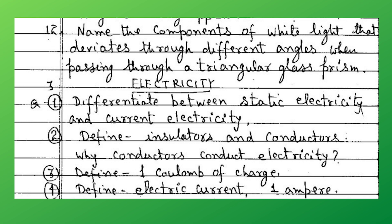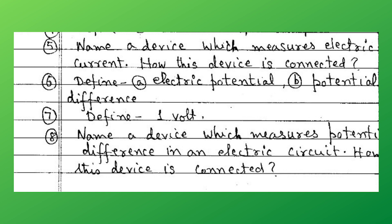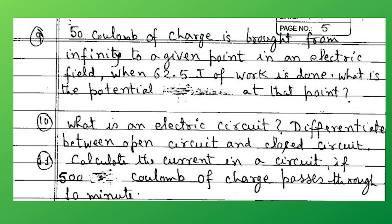Now, electricity. Differentiate between static electricity and current electricity. Define insulators and conductors — why do conductors conduct electricity? Define one coulomb of charge. Define electric current and one ampere. Name a device which measures electric current and how this device is connected. Define electric potential and potential difference. Define one volt. Name a device which measures potential difference in an electric circuit and how this device is connected. Sum: 50 coulombs of charge is brought from infinity to a given point in an electric field when 62.5 joules of work is done — what is the potential at that point?